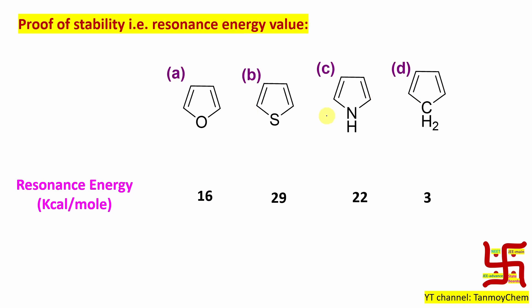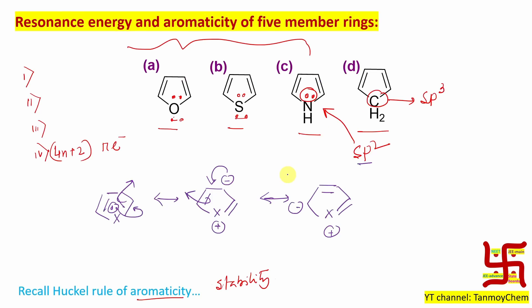See here, resonance energy is 29. Question: why? Because if you take sulfur at this position, sulfur has vacant d orbitals. What does this 3d do?